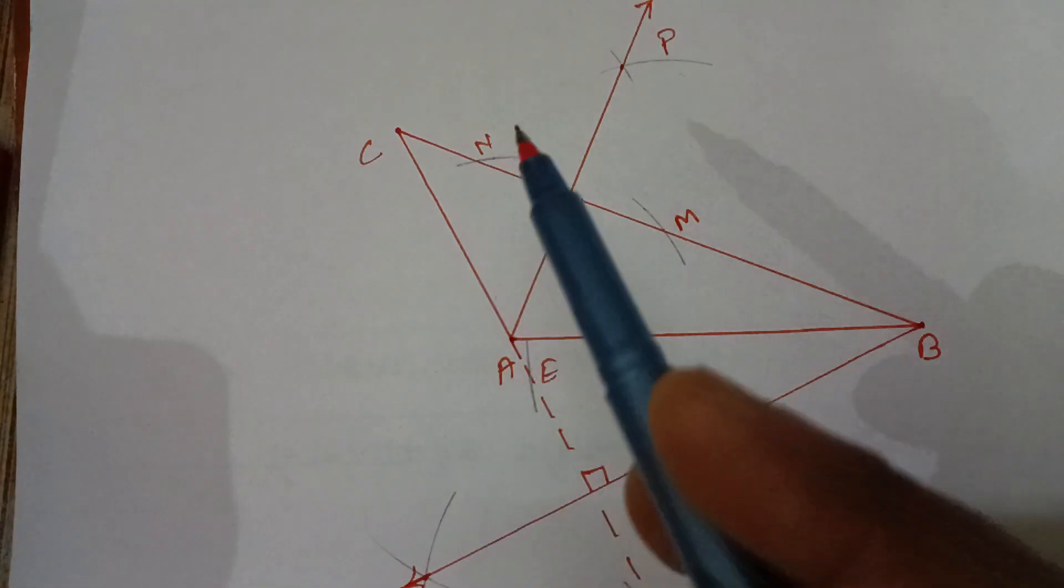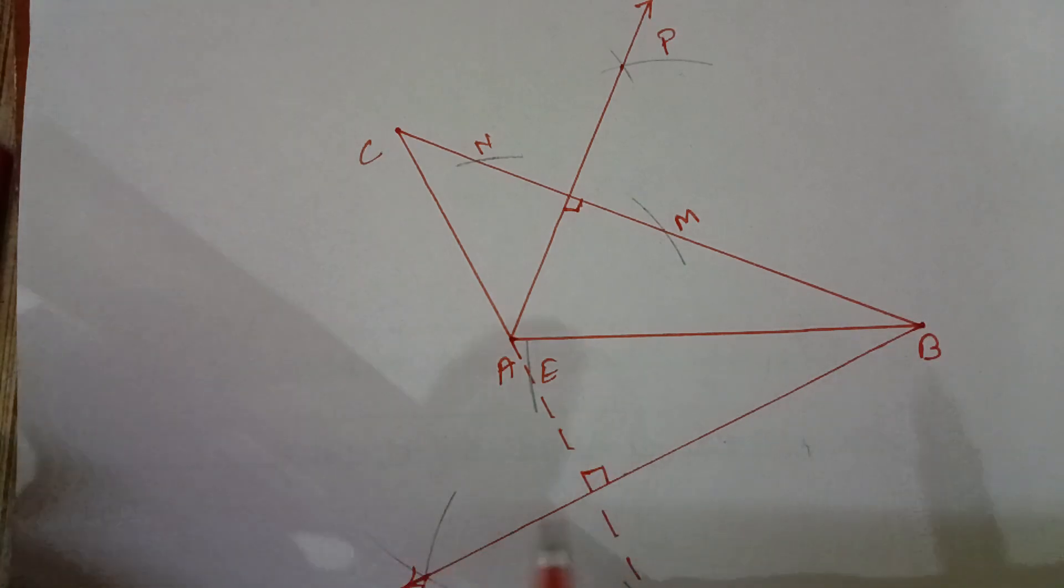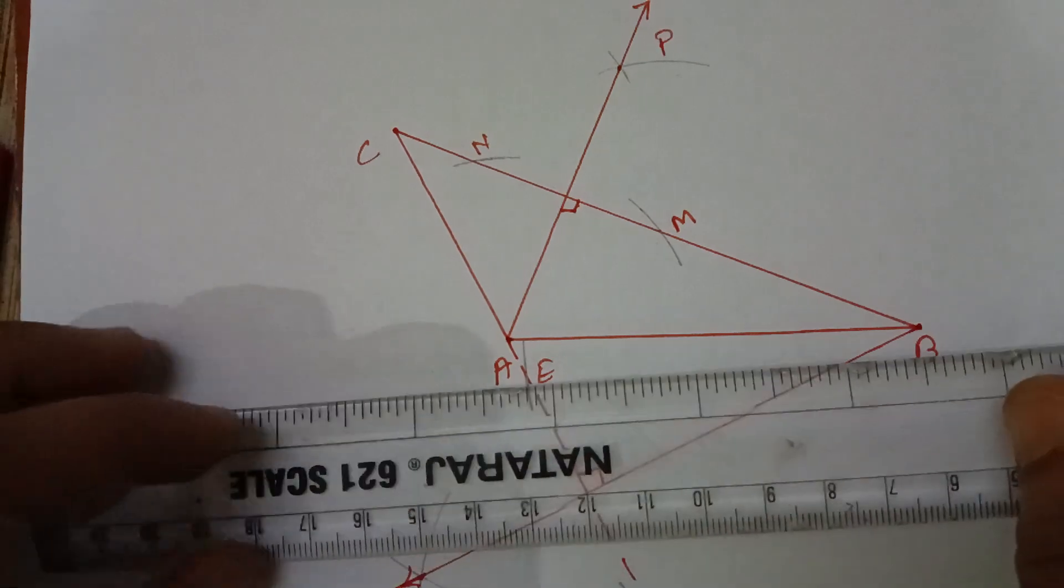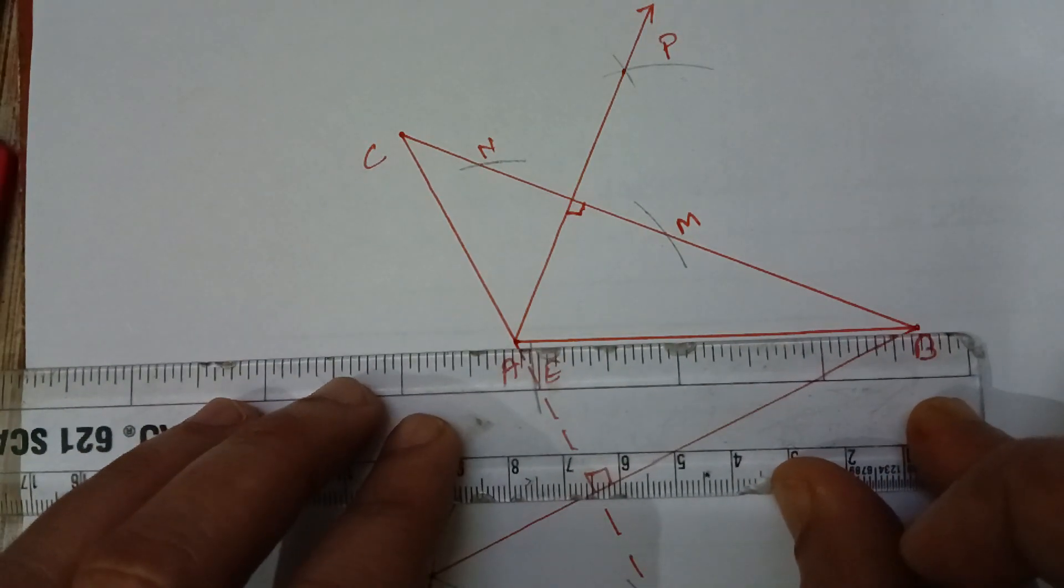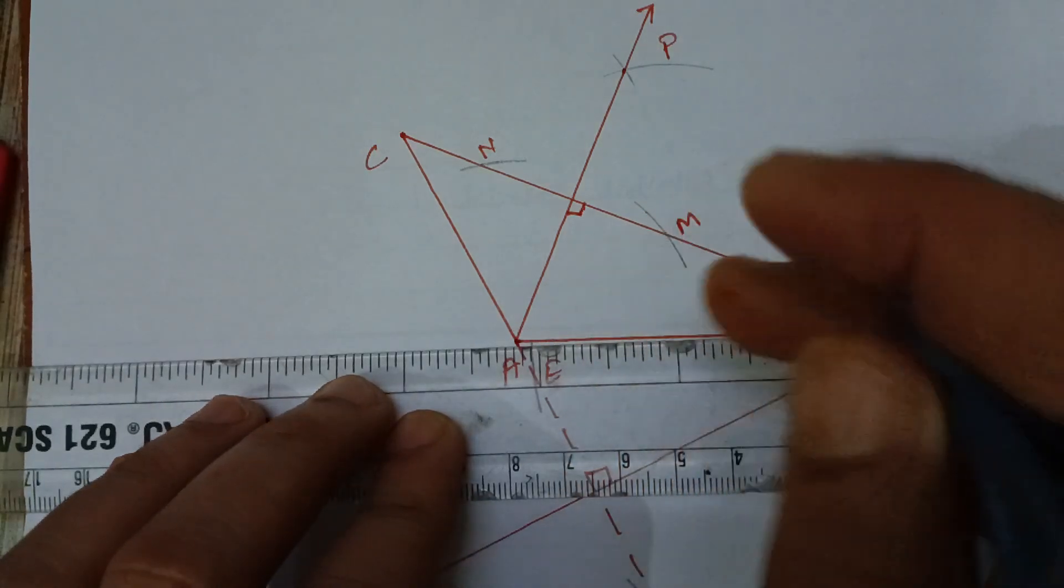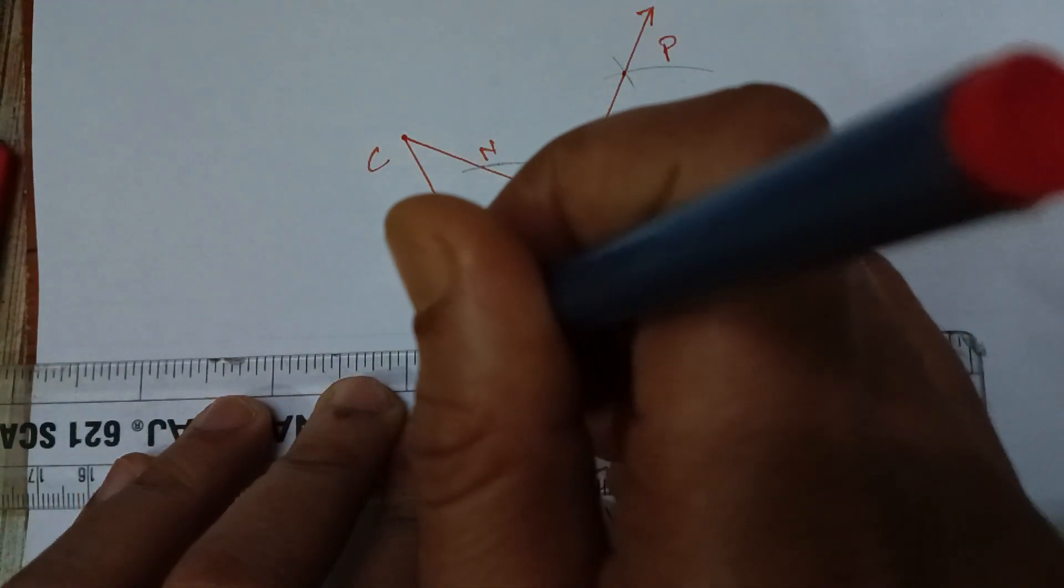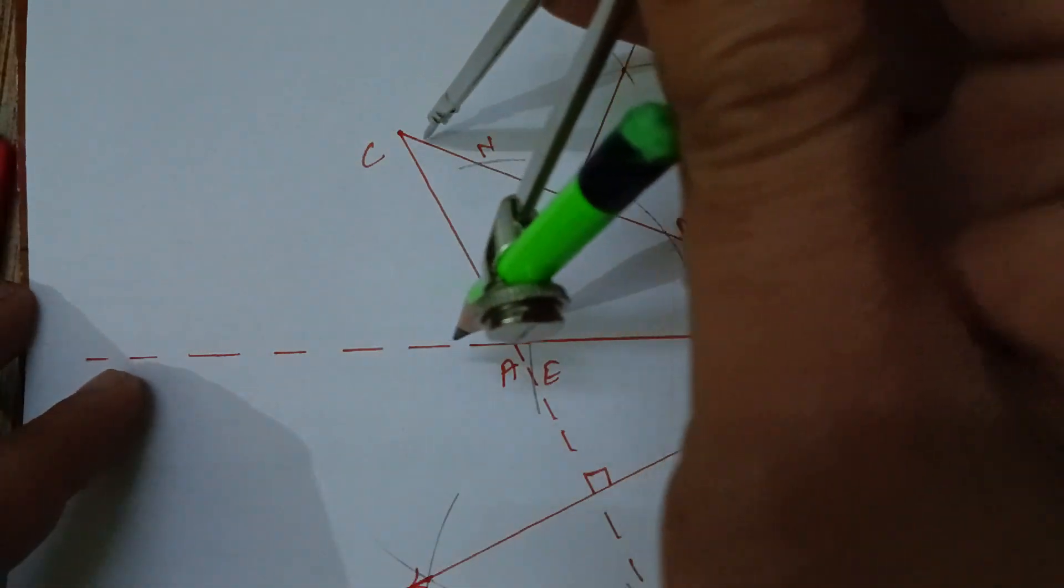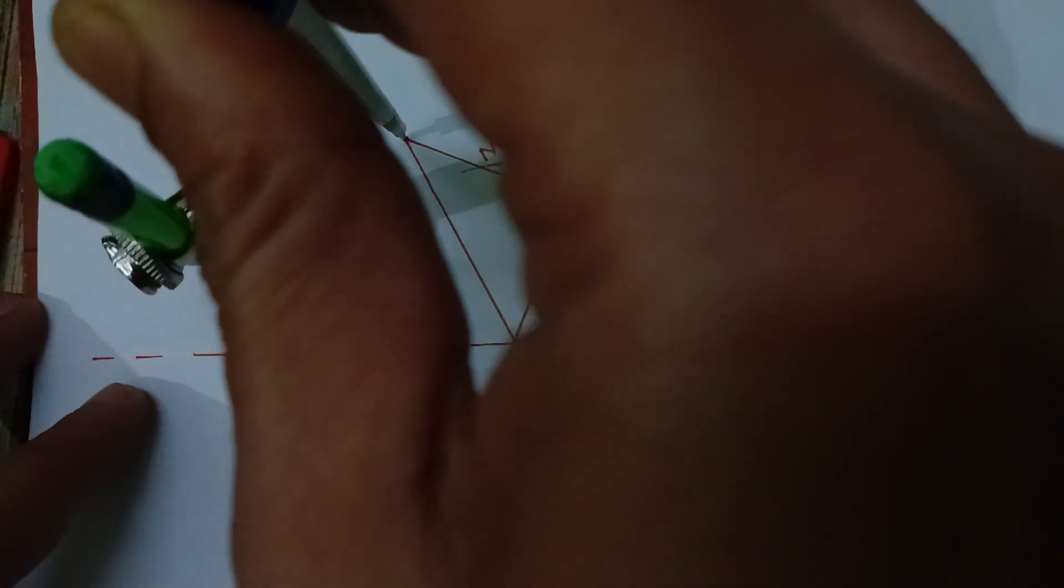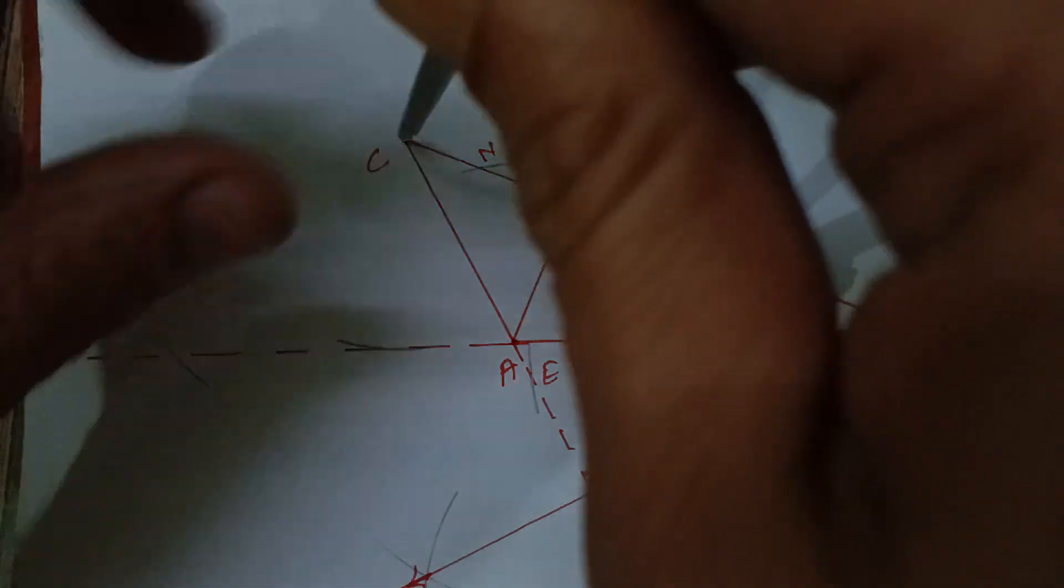Now, draw the perpendicular from C on AB. Again, extend AB because the perpendicular from C lies here. So, extend AB, dotted line here and now again from point C, cut at two points. One cut at here and another cut here, in this way, one arc here and another arc here.